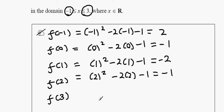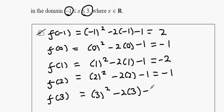Finally, f(3): 3 squared minus 2 times 3 minus 1 — put that into your calculator and what we get is 2. So the point is (3, 2).